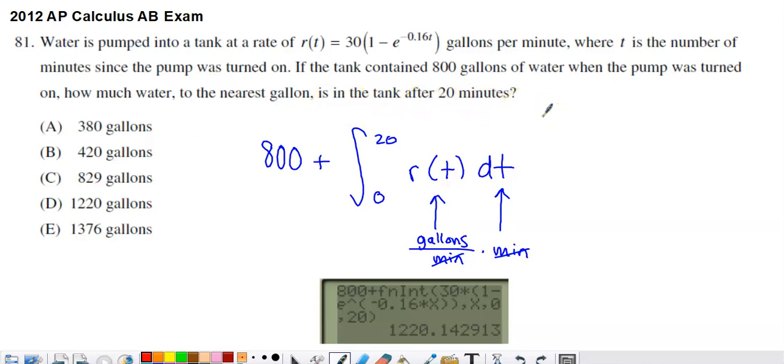So what we're going to have to do here is take the starting amount of water, which was 800 gallons, and we're going to have to add on how much water was pumped into the tank from time zero to time 20. So you see the 800, the starting amount of water, plus the amount that's added on.